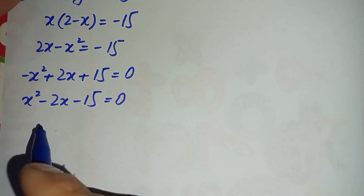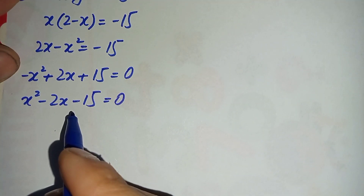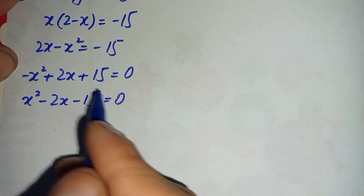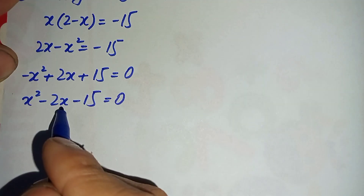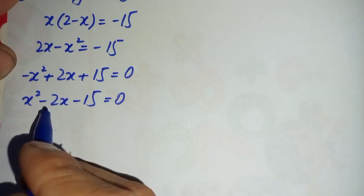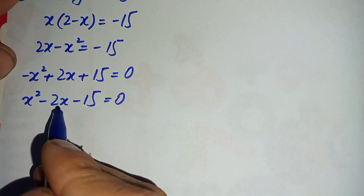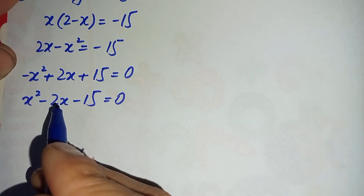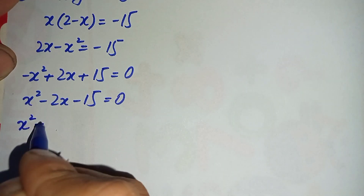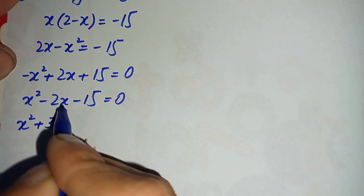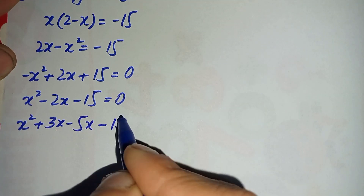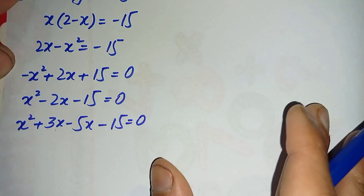This is a quadratic equation, so we will solve it by the factorization method. The two numbers whose product is minus 15 and sum is minus 2 are plus 3 and minus 5. So we replace minus 2x with plus 3x minus 5x, giving x squared plus 3x minus 5x minus 15 is equal to 0.